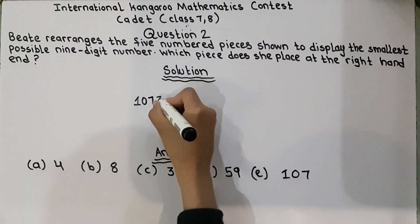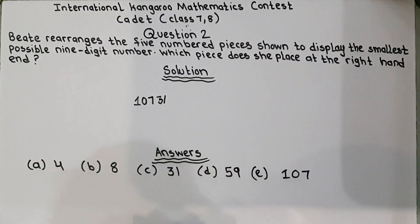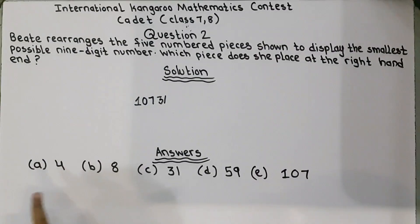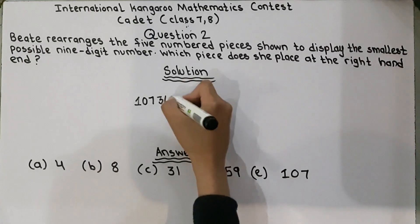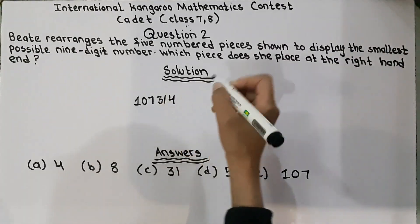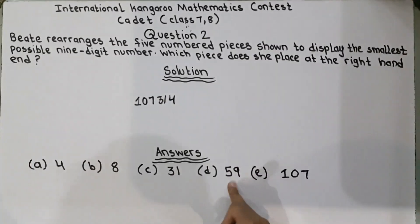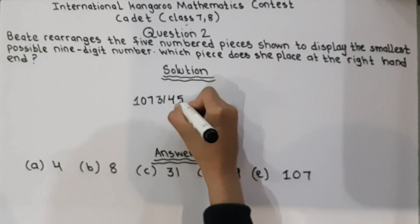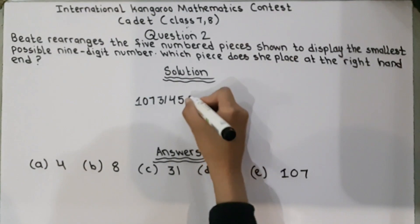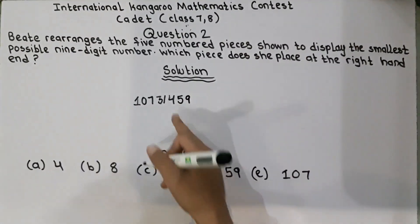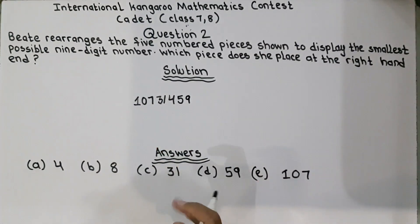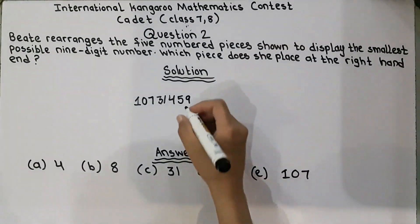So 3 will come and 1 will come, and then 5 will come, and then 9 will come, and then 9 will come with this pair because they are in pair. That's why we write them in pair. Then at last, 8 will come.